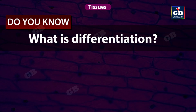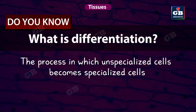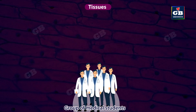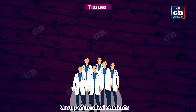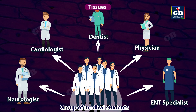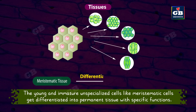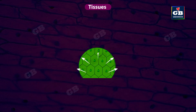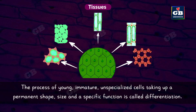Differentiation is the process in which unspecialized cells become specialized cells. We can compare unspecialized cells to students of a medical college — after they graduate, they take up a specialization and become specialists. In the same way, young and immature unspecialized cells like meristematic cells get differentiated into permanent tissue with specific functions. So the process of young and immature unspecialized cells taking up a specific shape, size, and function is called differentiation.